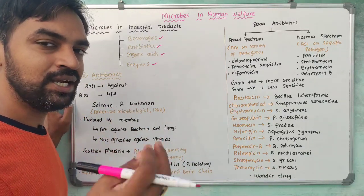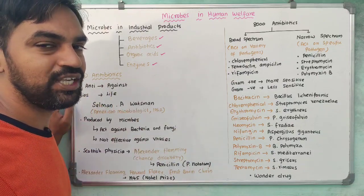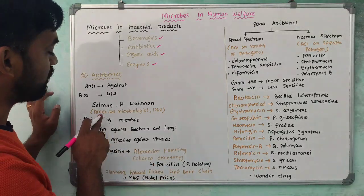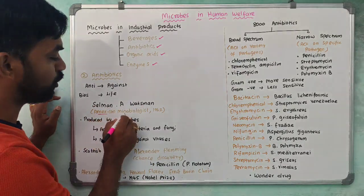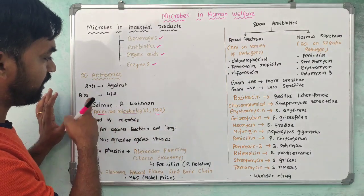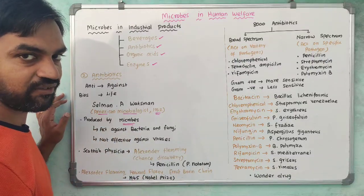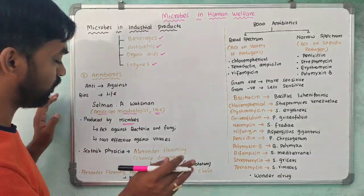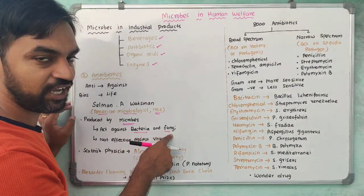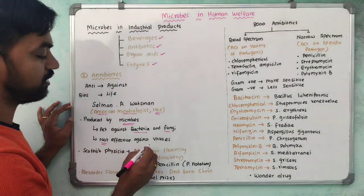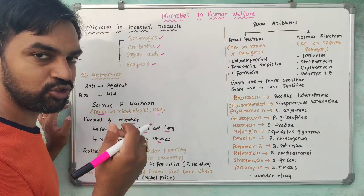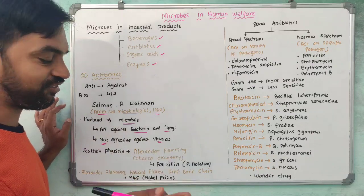Antibiotics attack and destroy pathogens with minimal side effects to the host. These antibiotics are produced by microorganisms — that is, bacteria and fungi — which destroy pathogenic bacteria and pathogenic fungi.